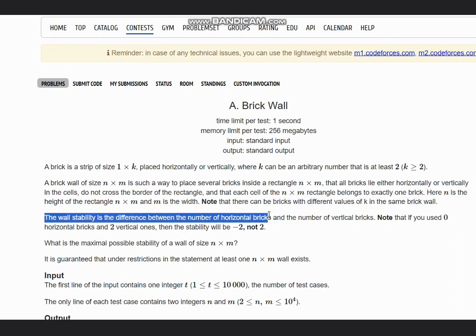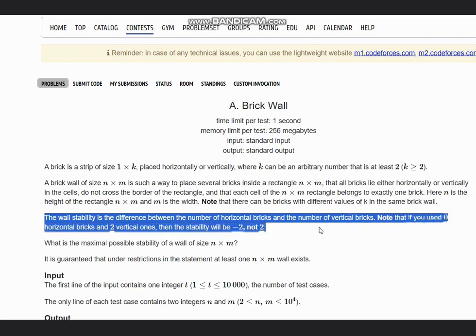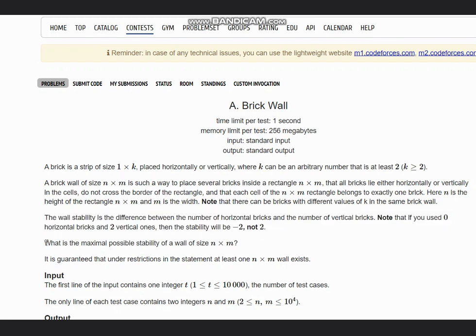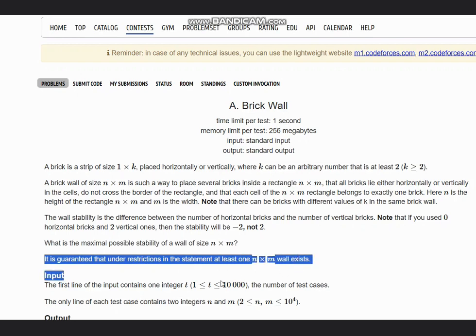The wall stability is the difference between the number of horizontal bricks and number of vertical bricks. If you use zero horizontal bricks and two vertical ones, stability will be -2, not 2. What is the maximum possible stability of a wall of size n×m? It is guaranteed that under restrictions in the statement, at least one n×m wall exists.